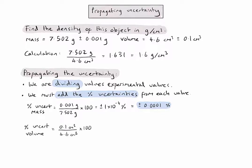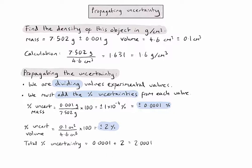Now that I have the percentage uncertainty of each experimental value, I can add those together to find the total percentage uncertainty. When adding two values together, I need to consider the decimal places in my answer. The smallest number of decimal places in my calculation is zero, so I give my answer to zero decimal places. I've now propagated my uncertainty to give a total percentage uncertainty, and I can present this with my calculated density.